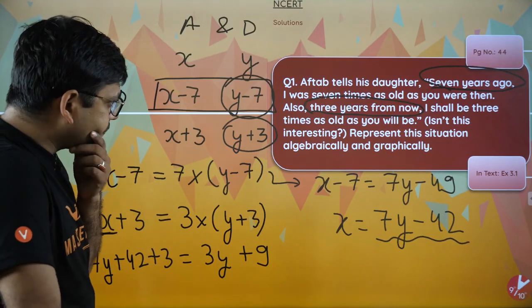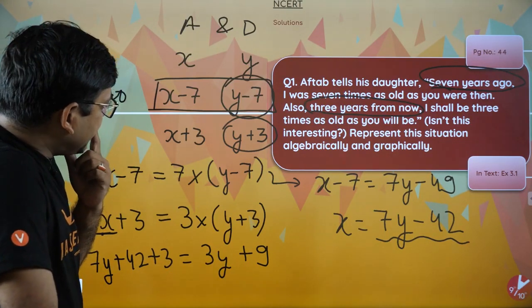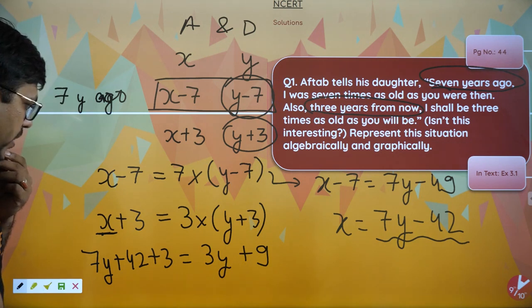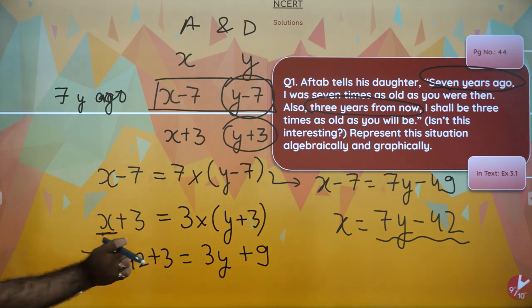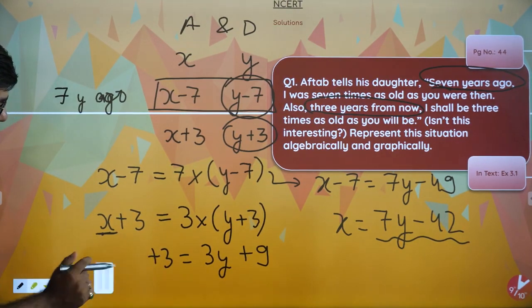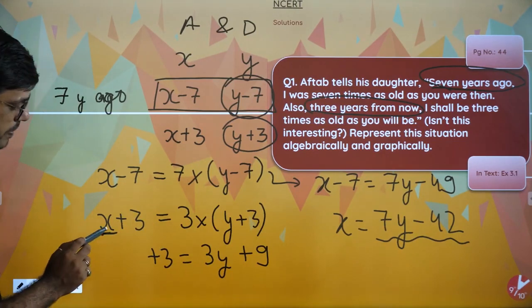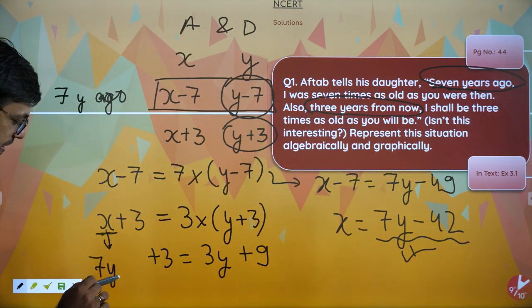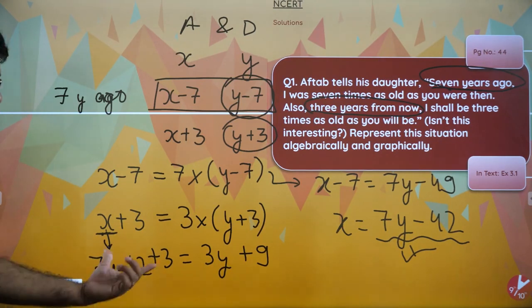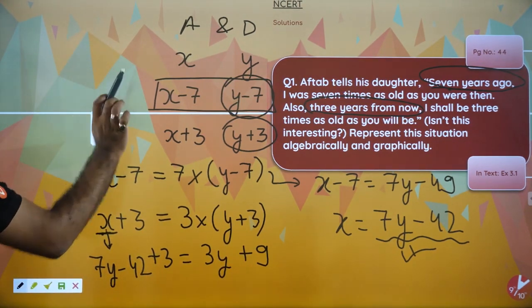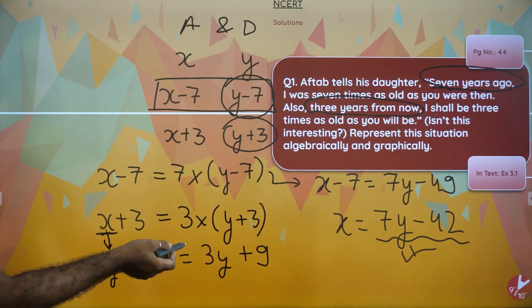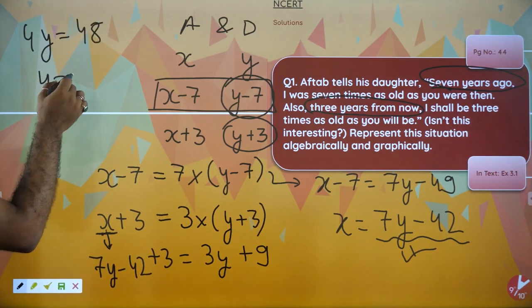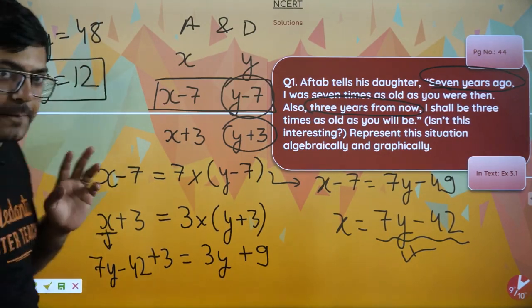यहाँ कुछ गड़बड़ा रहा है — अज़ sorry, very sorry। यहाँ पे मैंने plus 42 कर दिया इसलिए गलत हो रहा था। यहाँ पे minus 42 होगा, sorry। X की जगह डालना है 7Y minus 42, मैंने plus कर दिया था। तो यह हो जाएगा 7Y minus 42 plus 3 equals 3Y plus 9। Solve करने के बाद — 4Y = 48, तो Y की value होनी चाहिए 12। मतलब उसकी बिटिया आज 12 साल की है।